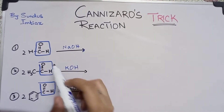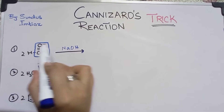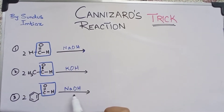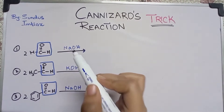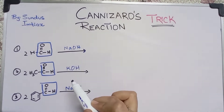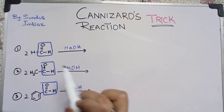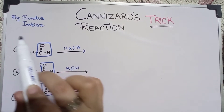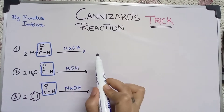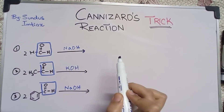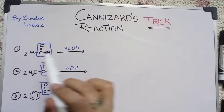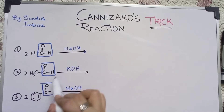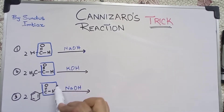If the examiner asks you to complete these types of Cannizzaro's reaction, here is what you have to do. In Cannizzaro's reaction, the aldehyde converts into an alcohol and an acid functional group. First, identify the aldehyde functional group, which I have highlighted here.